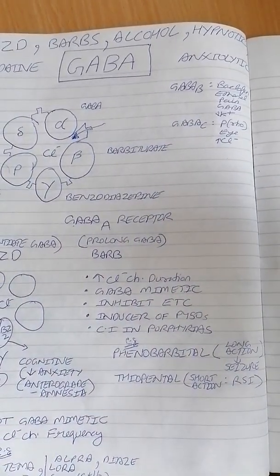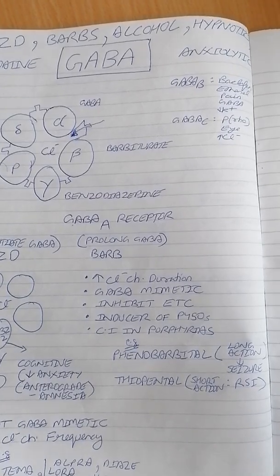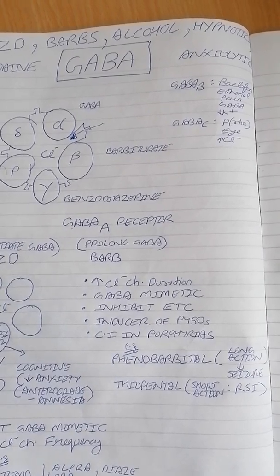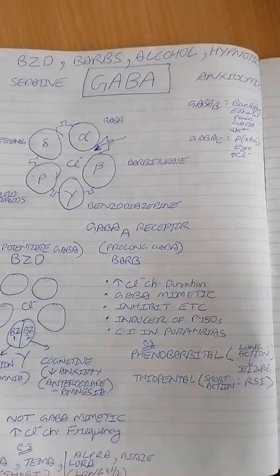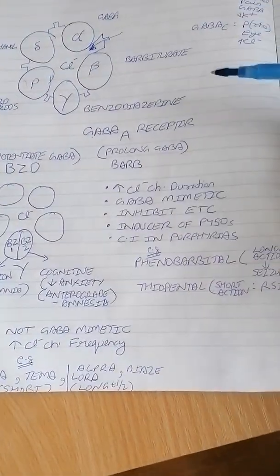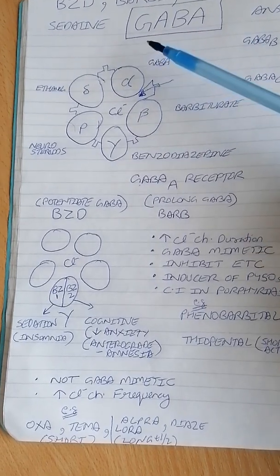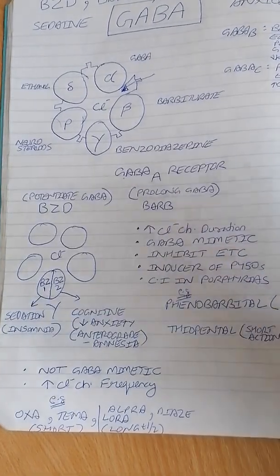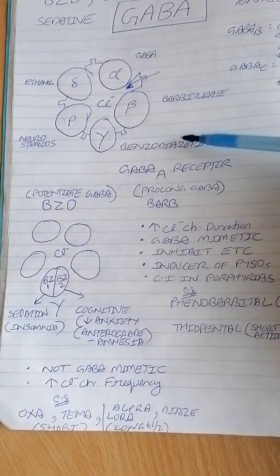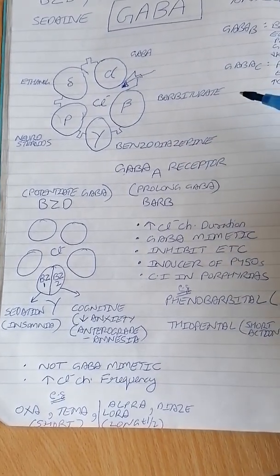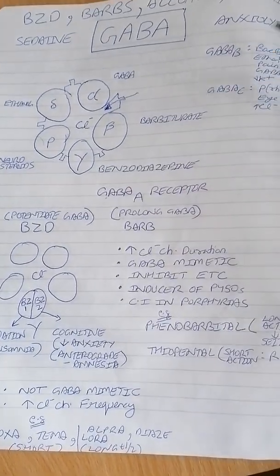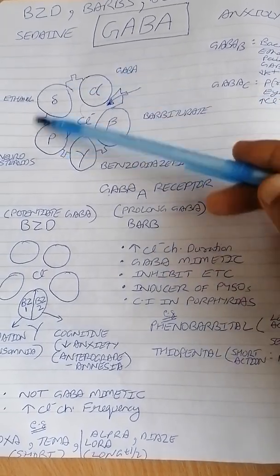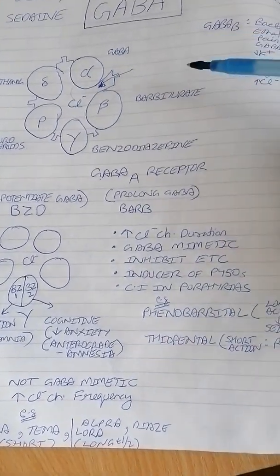The conclusion is that there is no conduction of action potential, so the brain remains at a depressed level rather than an excitatory level. GABA depresses CNS activity, and the same applies to barbiturates and benzodiazepines — they are all CNS depressants, since they work on GABA receptors.